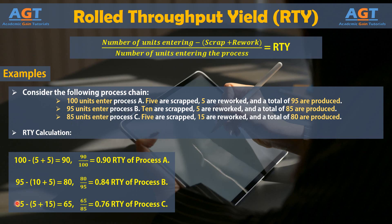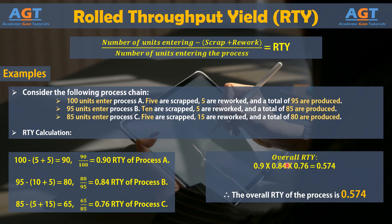The number of units entering process C is 85, minus 5 scraps plus 15 reworks, equals 65. Now 65 divided by 85 equals 0.76, which is the rolled throughput yield for C. The overall rolled throughput yield for the whole process is obtained by multiplying its 3 rolled throughput yields: 0.9 × 0.84 × 0.76 equals 0.574. So the overall rolled throughput yield for the process is 0.574, which is a much lower rate than when you look at first-time yield alone.